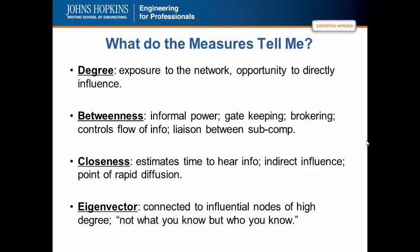Degree is used to describe exposure to the network. It is who you would think would be significant or popular in the network. Betweenness, the focus of this lecture, is a measure of informal power. A node high in betweenness is able to broker knowledge, information, resources from one side of the network to the other. Closeness is used in diffusion processes. It has the shortest time to get information or resources exchanged to other nodes. And eigenvector is not what you know but who you know.